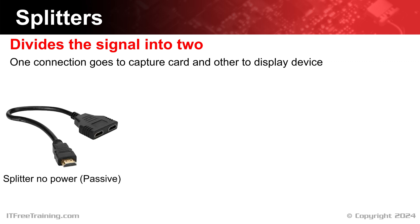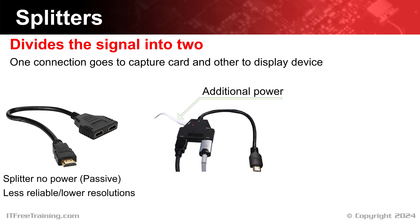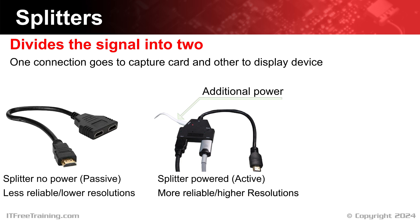Passive splitters don't have power, so they essentially halve the signal strength as it goes through the cable, making them less reliable and unable to support higher resolutions. To make a splitter more reliable, a powered splitter is available. Depending on the splitter, it may be powered externally — sometimes with a power pack and other times with USB. If the splitter is powered, it becomes an active splitter, which makes it more reliable and allows it to support higher resolutions. If you don't power the splitter it will generally still work, but it becomes a passive splitter. When you have the option, you are generally better off powering the splitter.